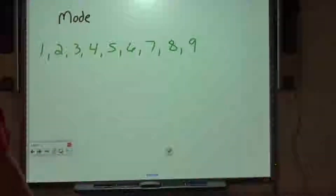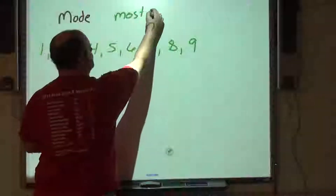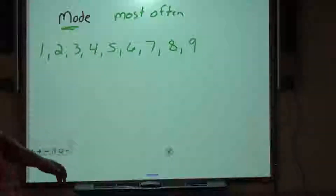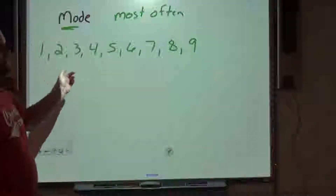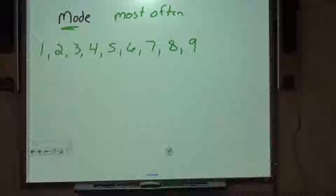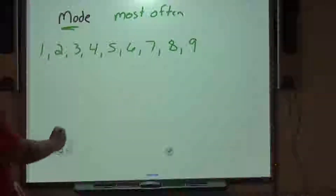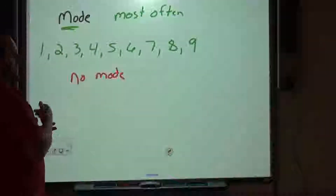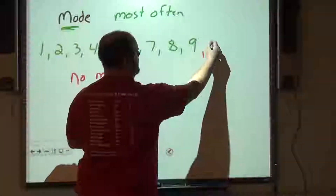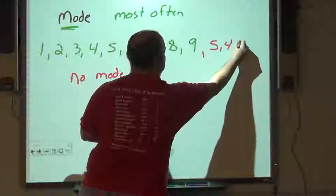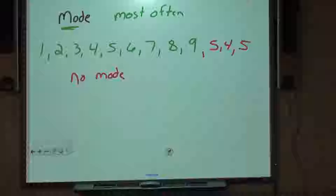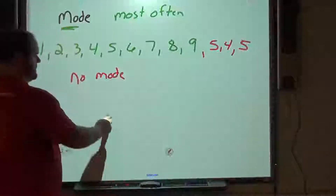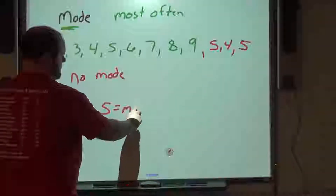The mode stands for 'most often' — M-O, most often. Looking at digits 1 through 9, we do not have a term that appears most often; they're all equal, so we write 'no mode.' Now if I added a 5, a 4, and another 5 — the 4 occurs twice but the 5 occurs three times, so the mode would be 5.